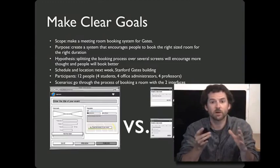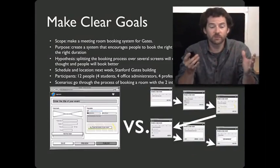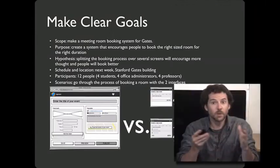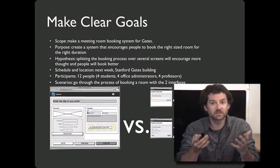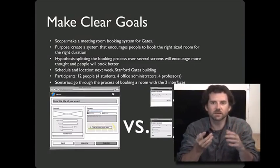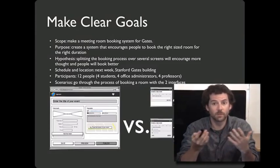The first step is to make clear goals. For example, say you were building a room reservation system for a computer science department. One strategy would be to put all the information on one page; another strategy would put different pieces on different pages. You might be particularly interested in whether splitting things up changes whether people will book a right-sized room or not. Before running your study, lay out its scope. You don't need to cover an entire system, especially if you're working on a huge piece of software. It's okay to have a narrow scope, and that scope will be guided by the purpose of your study — what you hope to learn. Come up with a hypothesis ahead of time and figure out a way to know whether your hypothesis is true or not.